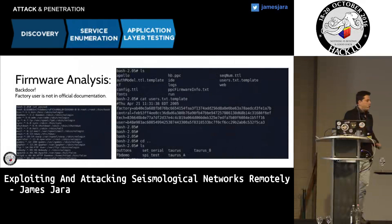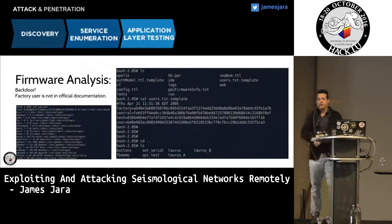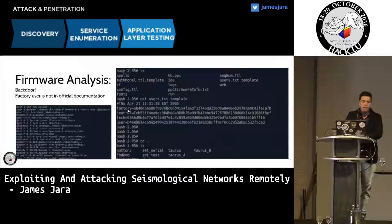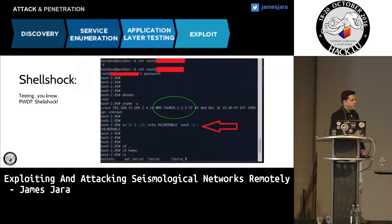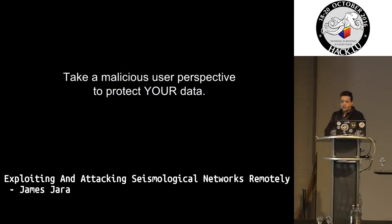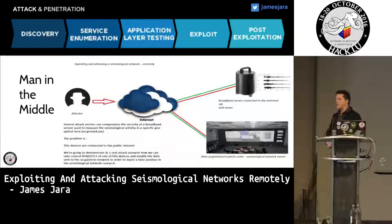Going back to the firmware analysis — we are looking for the root password inside the files, and we decoded it. We also discovered a backdoor: there is an undocumented user called 'factory'. As you can see in the image, we have 'central' as the text and username. The 'factory' user is not documented anywhere in the Nanometrics documentation, so anyone can use it. Also, when we get inside the shell of any of these devices, Shellshock and other vulnerabilities are available. The idea is to take a malicious user perspective to protect your data, which we always say to all vendors. We can now execute a man-in-the-middle attack.